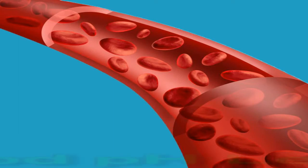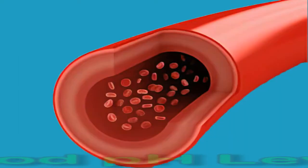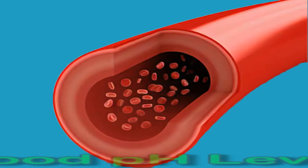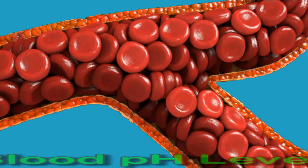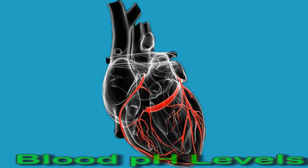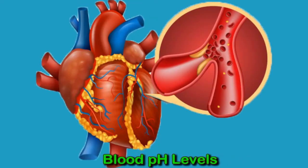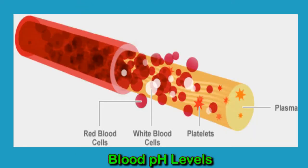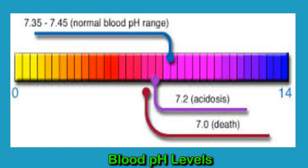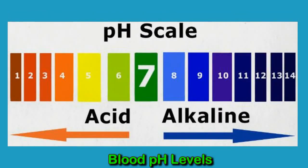Blood pH levels: causes and symptoms. The pH, which stands for potential of hydrogen, of blood refers to how acidic it is. Changes to blood pH can signal underlying medical issues. The pH scale, otherwise known as the acid-base scale, runs from 0 to 14. It measures how acidic a solution of a substance in water is. Solutions with a low pH have a high concentration of hydrogen ions and are acidic.